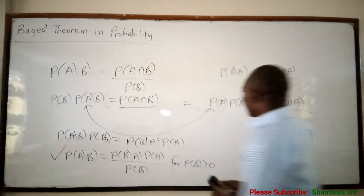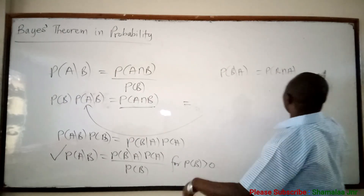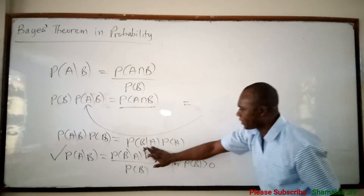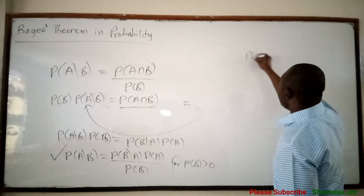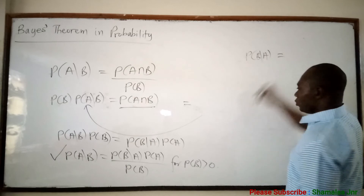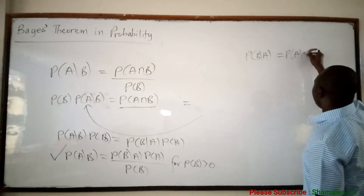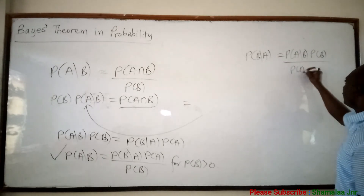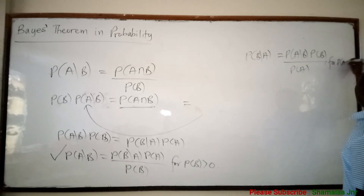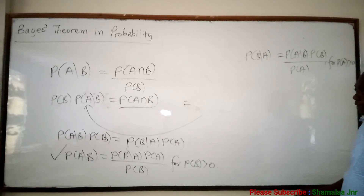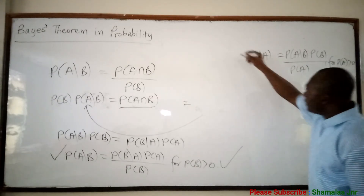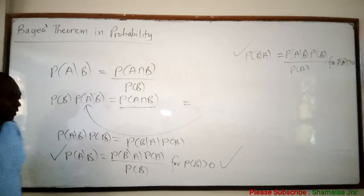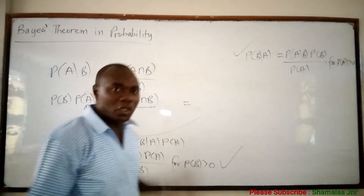Similarly, from here, if you decide to make probability of B given A the subject, you get: probability of B given A is equal to probability of A given B times probability of B over probability of A, for probability of A greater than zero. So this is Bayes' theorem in probability, and this is how to derive it.